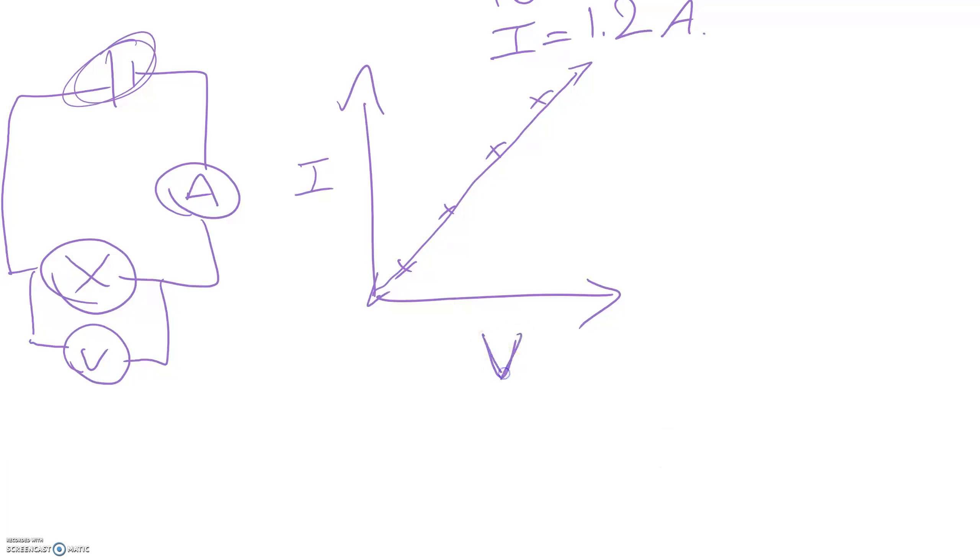When you graph it you get a perfectly straight line. When you look at voltage compared to current and you get a perfectly straight line like this, we know that this is an ohmic component or device. We know it's an ohmic component because when you graph voltage versus current for Ohm's Law, you always get a linear relationship.